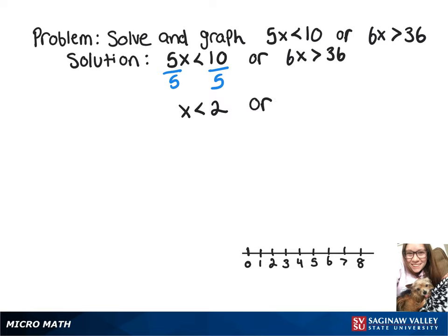Now we'll go back over to the 6x is greater than 36, divide both sides by 6, and that'll give us x is greater than 6.